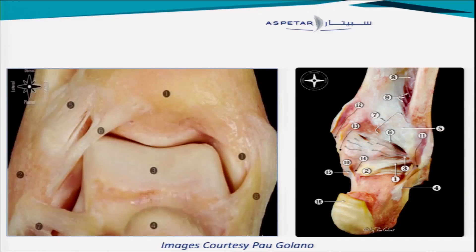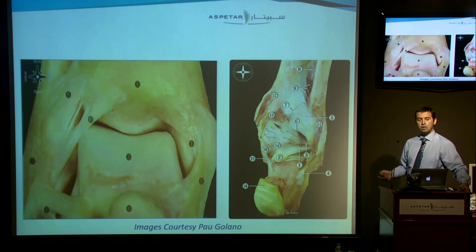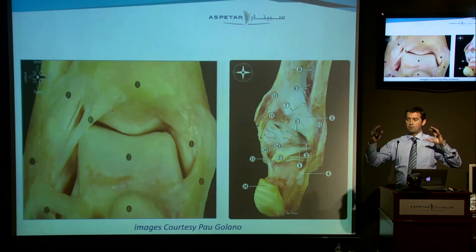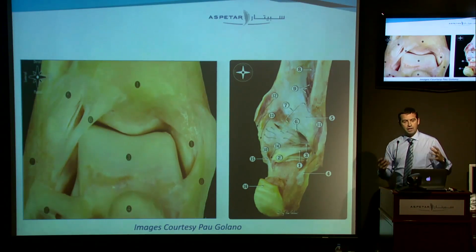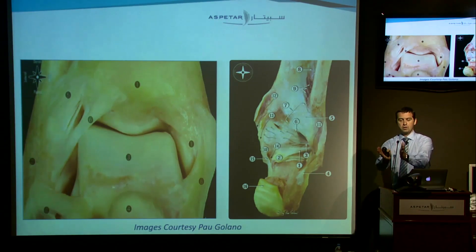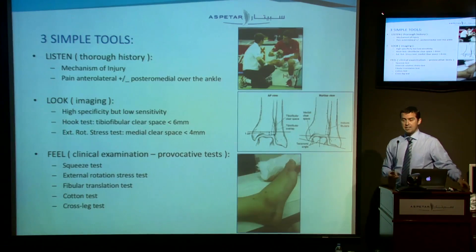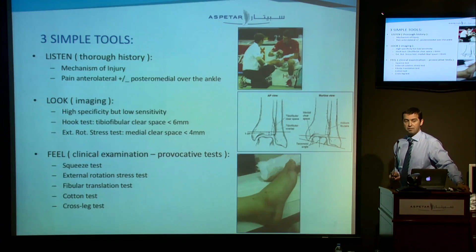So how does the syndesmosis look like? A quick roundup on the anatomy. You have the anterior inferior tibiofibular ligament. You have something in between the tibia and the fibula called the interosseous ligament. And you have one on the back. From the front, in the middle, to the back, you have a nice stabilizer of ligaments to join the distal part of that tibiofibular area so it doesn't open. I like to keep it simple. What do we do? We look, we listen, and we feel.